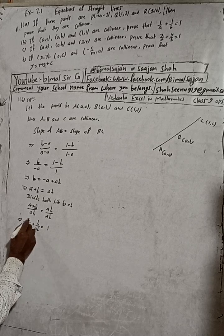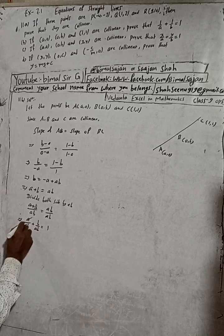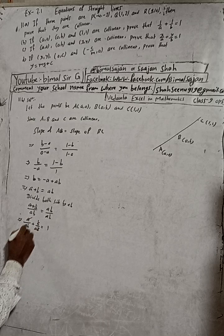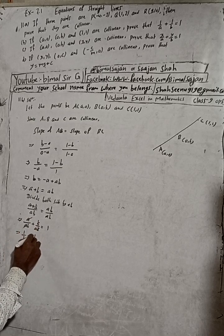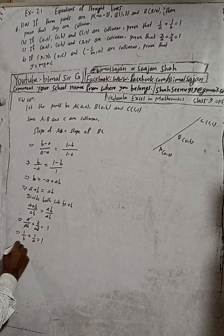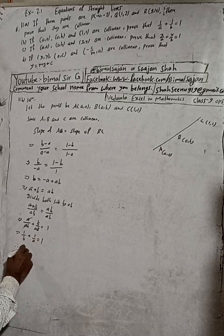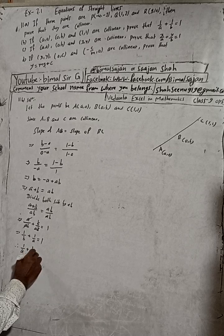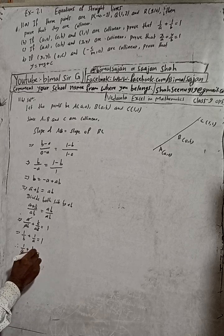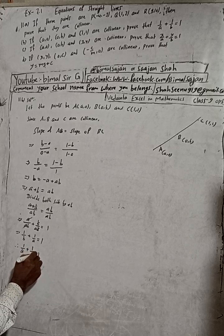Now a cancels with a, b cancels with b, so this is 1/b + 1/a = 1. Therefore, 1/a + 1/b = 1. Hence proved.